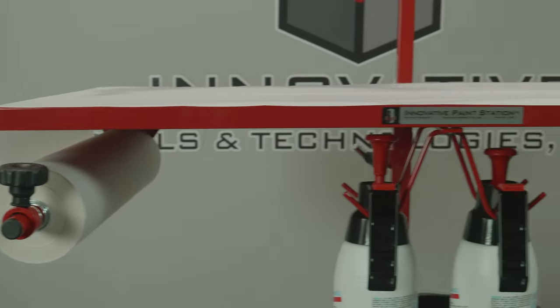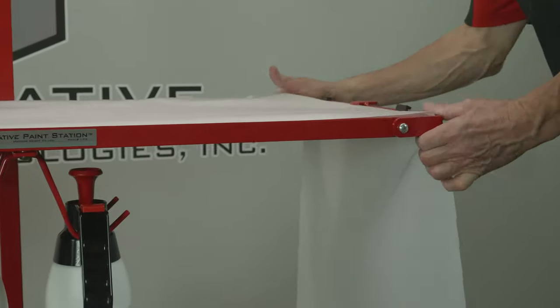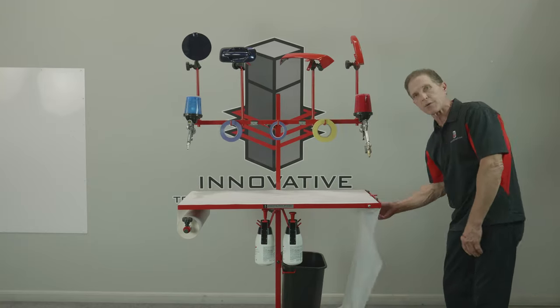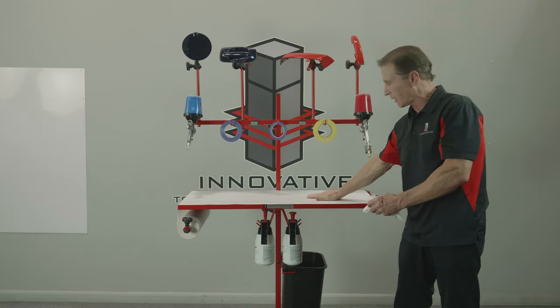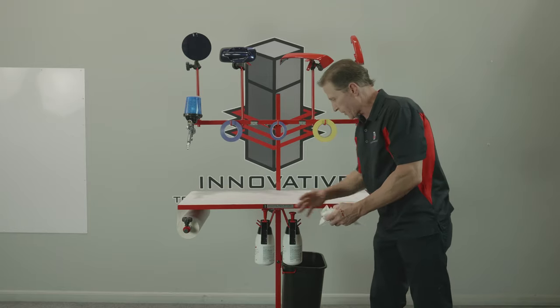And you just pull it through like that. And we've got little rubber pads here to lock in place. We actually have a tear blade on the table. Tear it off. You're ready to go. So you've got a perfectly clean surface. Paper doesn't move around.